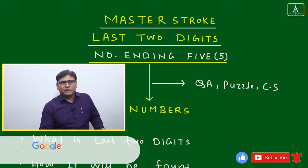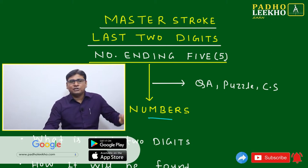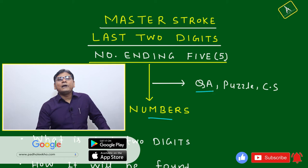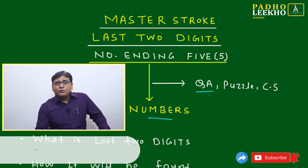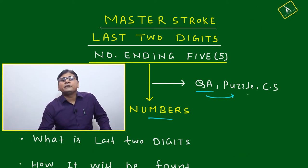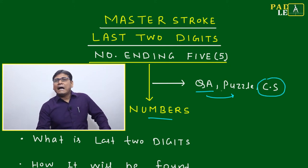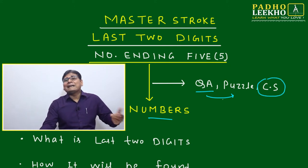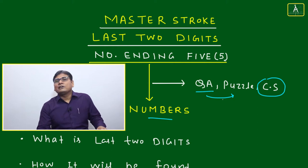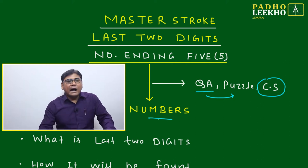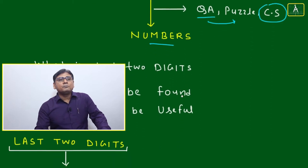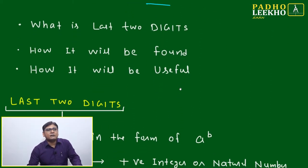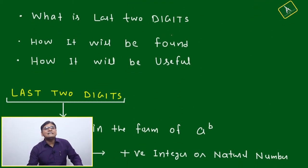This is a part of your numbers preparation — it will help your quantitative ability preparation. Apart from that, it will be helpful for solving puzzles and developing common sense. One special advantage is it will give you the sense of handling data. This is one of the shortcuts to find the last two digits.